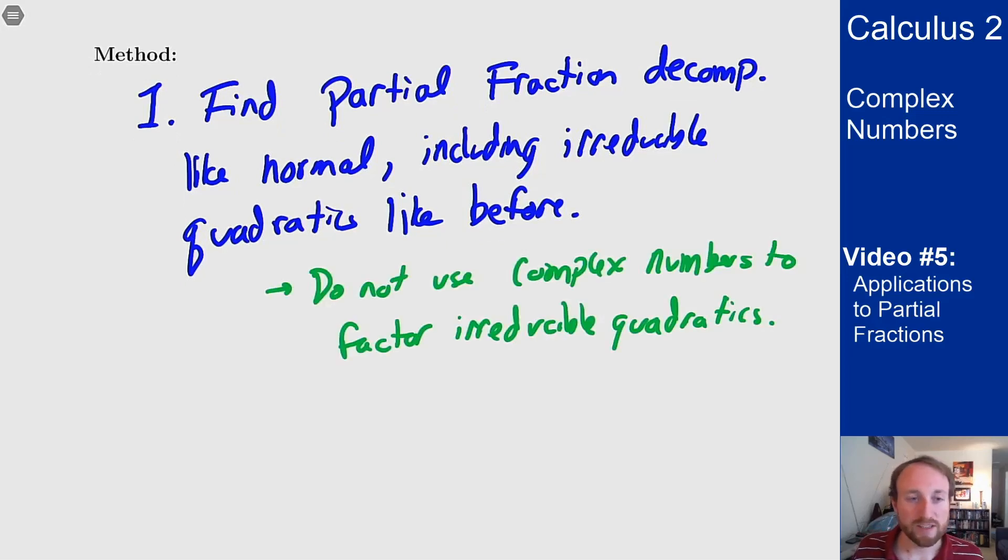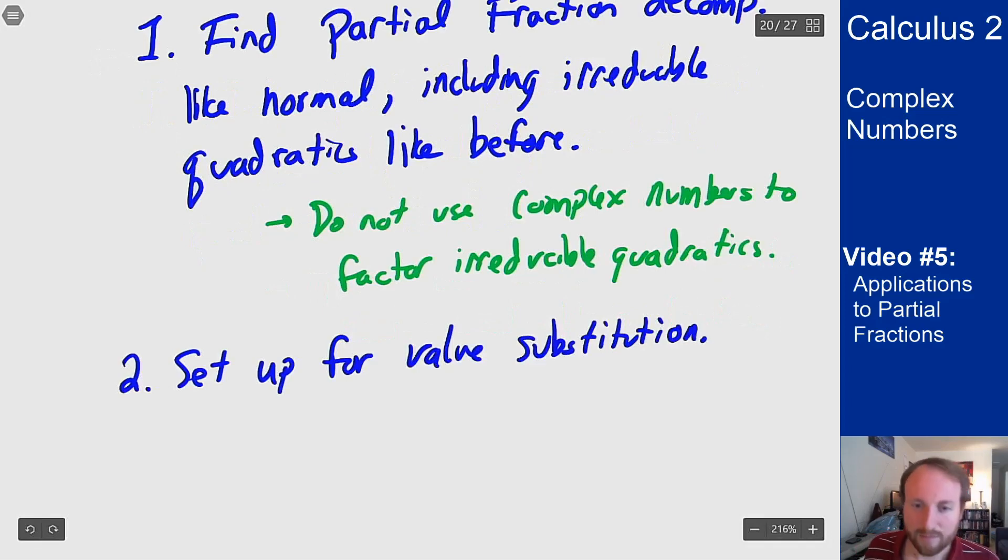So next you want to set up for value substitution and with this I mean sort of clear the denominator, get just the polynomial equals the polynomial on one side with the factors and the one that was originally the problem by itself and set that up and get ready to go.